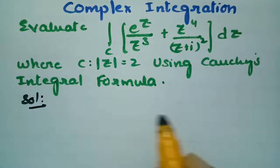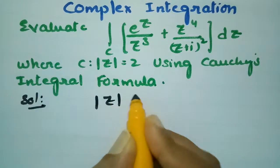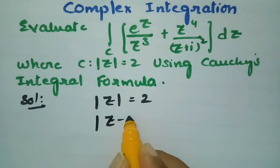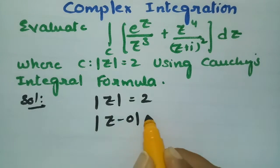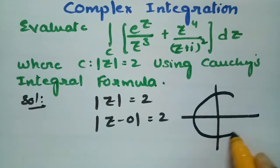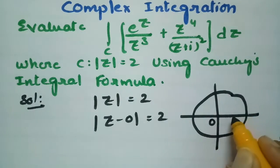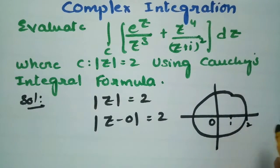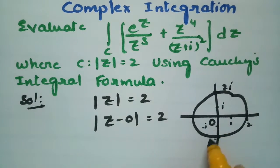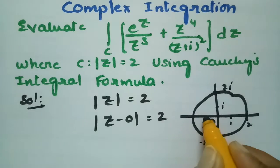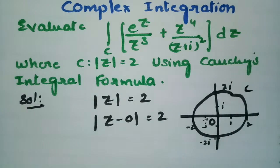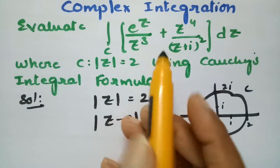In the solution, the contour is given as |z| = 2, which is a circle equation with center 0 and radius 2. So on the diagram this circle passes through 1, 2, i, 2i, −i, −2i, −1, and −2, and this is contour c. Now we have to evaluate this integral.